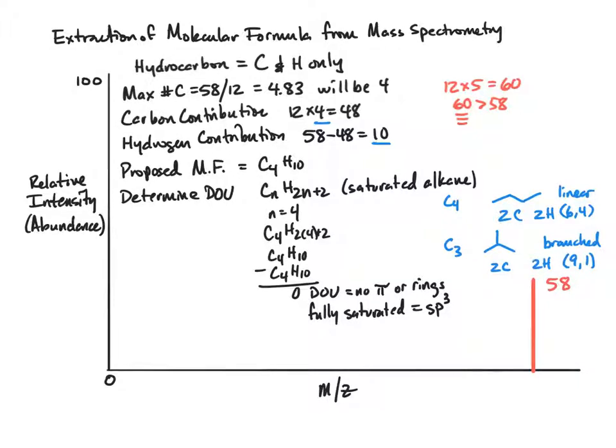This has been a screencast on how to convert mass spectrometry data into a molecular formula, determining the maximum number of carbons, the hydrogen contribution to come up with a proposed molecular formula, a review of degrees of unsaturation, and then the proposal of constitutional isomers with looking at unique number of carbons, hydrogens, and the ratios between them.